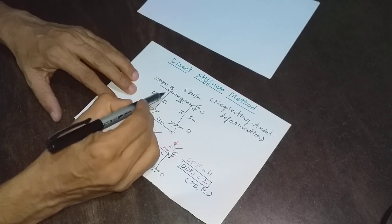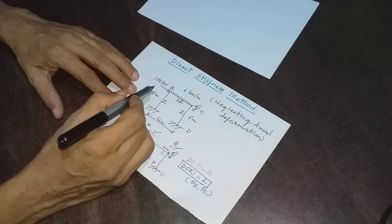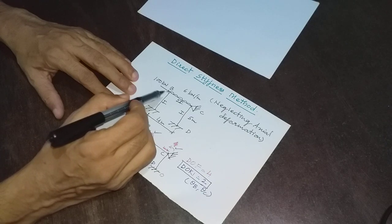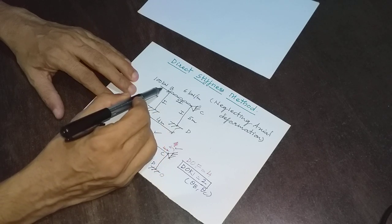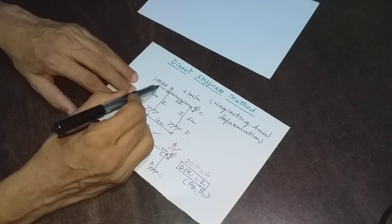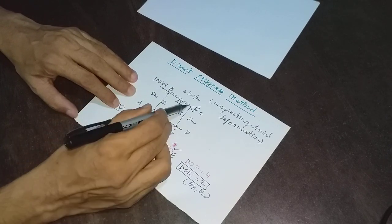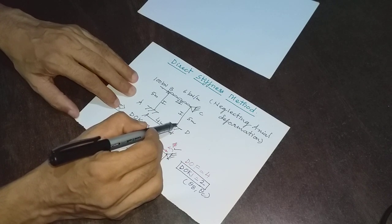Now I will find out the fixed end moments. Due to the 100 kN load acting at joint B, there will be no fixed end moment in AB or BC because this load acts at the joint. Loads acting at a joint do not contribute to fixed end moments — only loads acting on a member do. So fixed end moment due to 100 kN is zero.